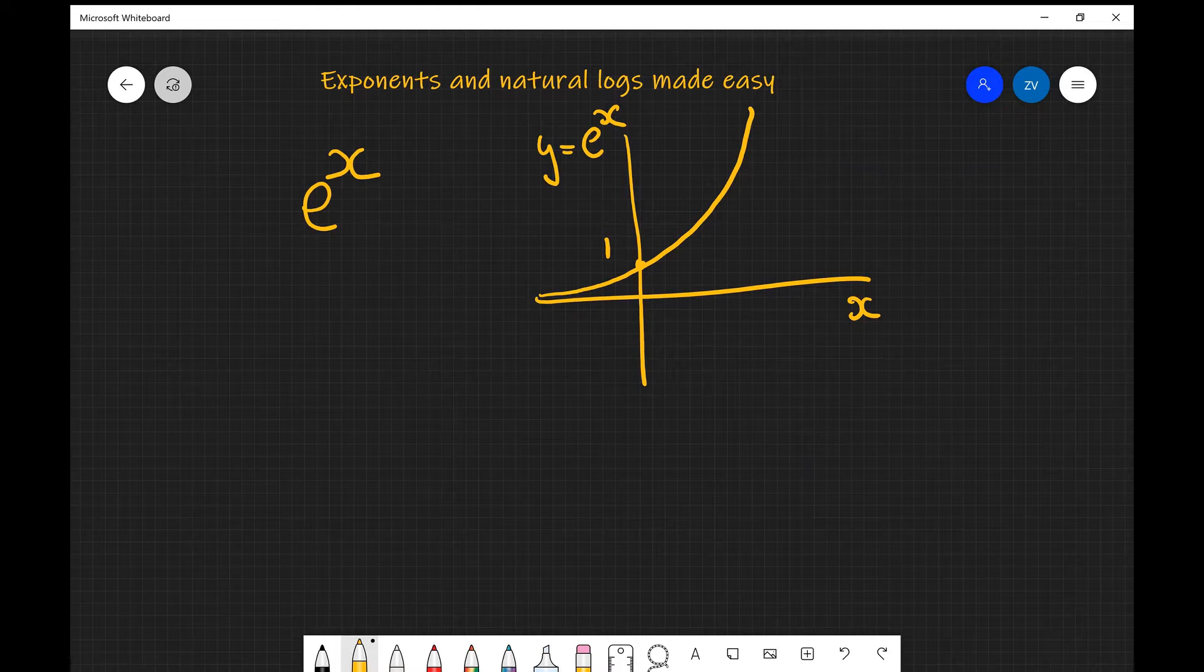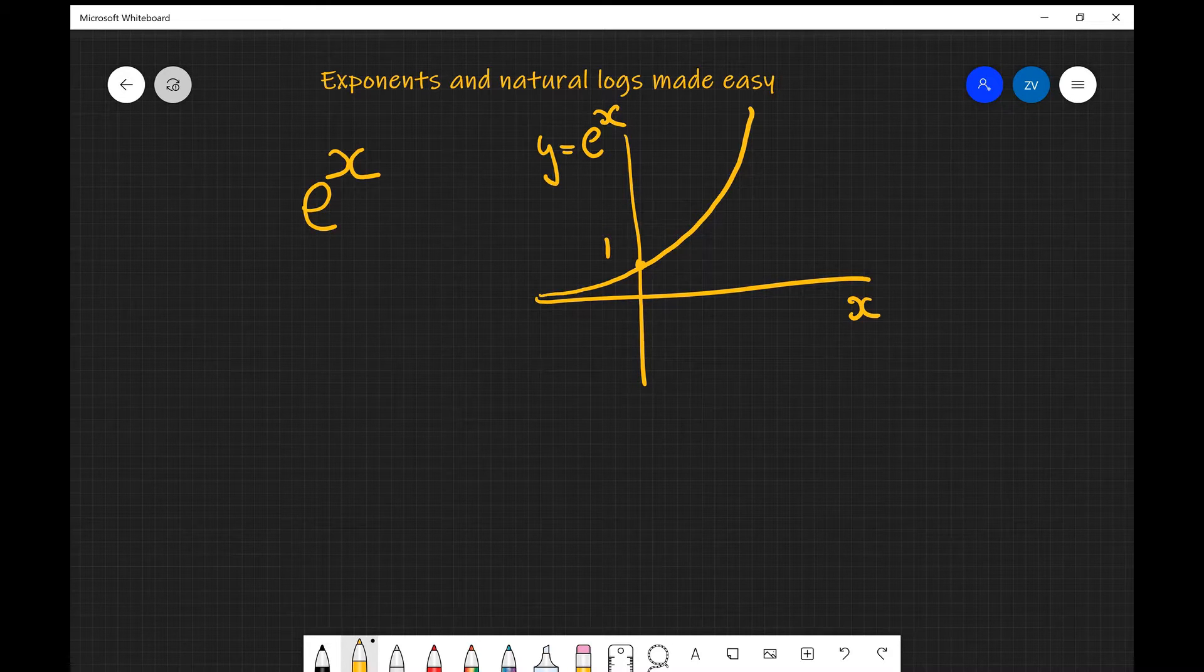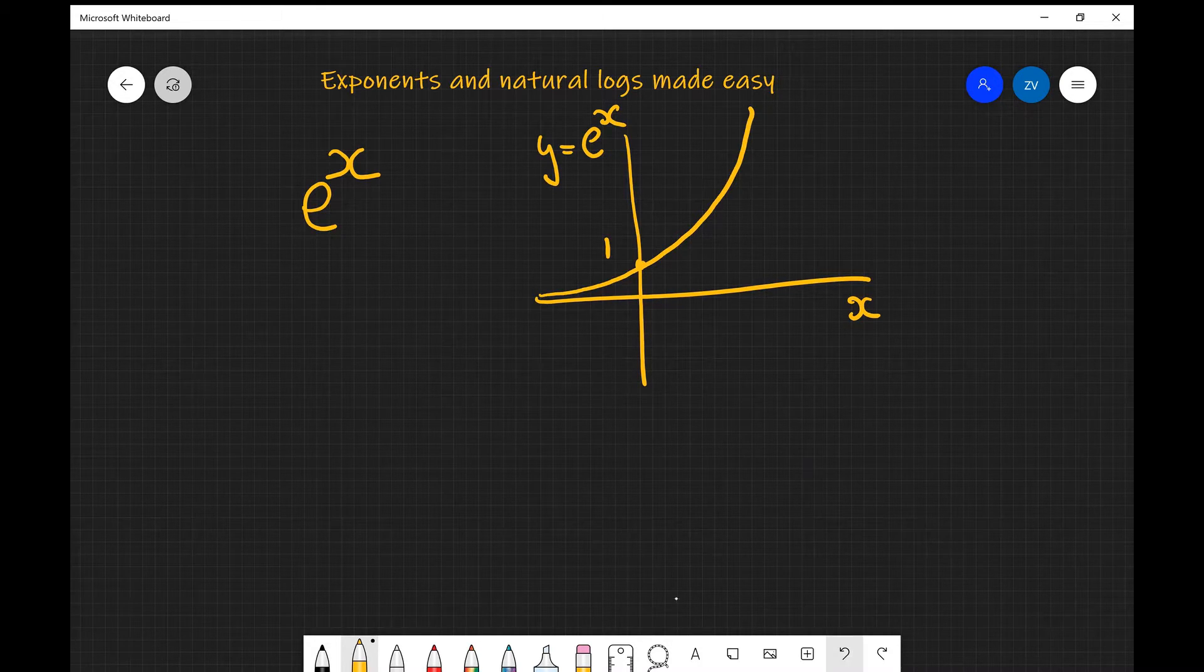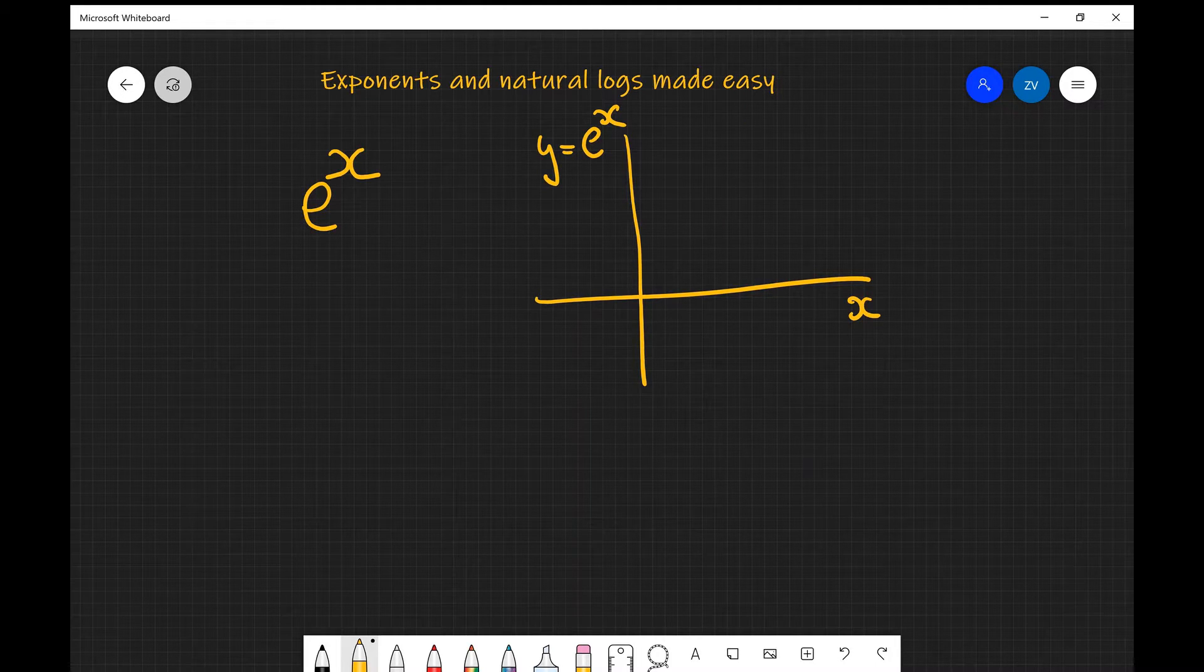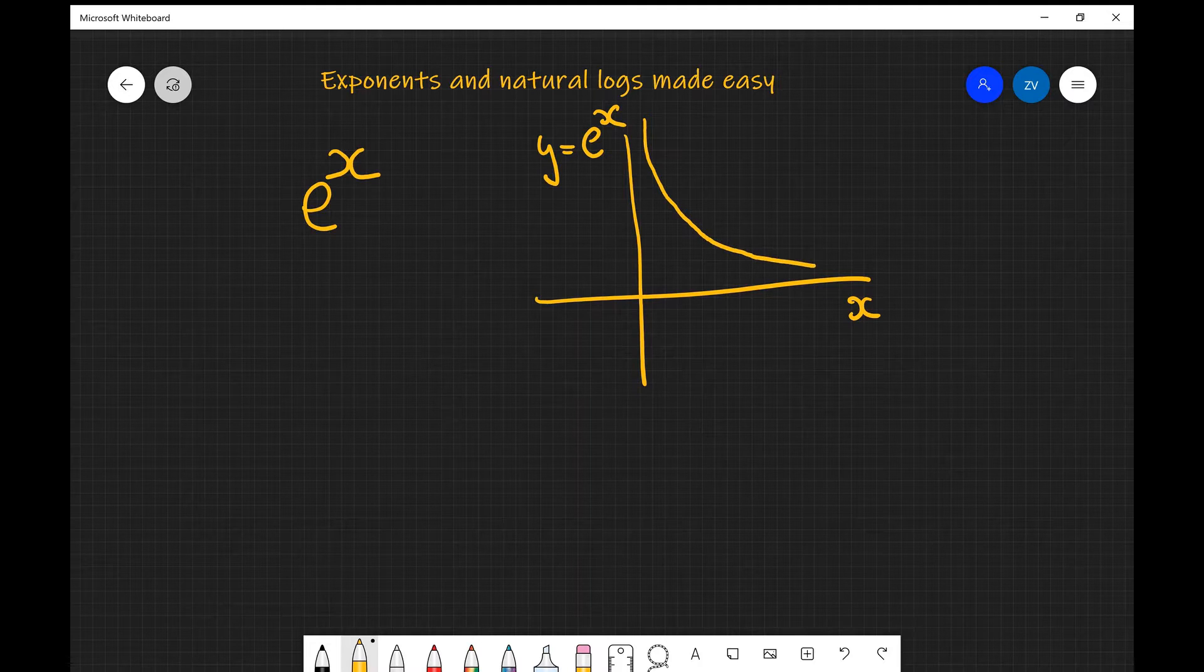The opposite happens if we had y is equal to e to the minus x. So if we had e to the minus x we're going to have a really rapid decay, pretty similar to a capacitor discharging.